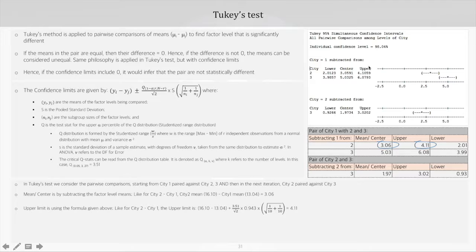The next important stats to check are the lower and upper limits. Let's take the upper limit for city two to city one comparison. This upper limit comes from the formula: it's the difference between the two city means (16.10 and 13.04) plus the q value (3.51) divided by the square root of 2, multiplied by the pooled standard deviation, and then we have n_i and n_j, which are the subgroup sizes. In this case, all three cities have 10 data points each, so this gives us the square root of 1/10 plus 1/10. These factors calculate to 4.11 as the upper limit for city 2 to city 1 comparison.